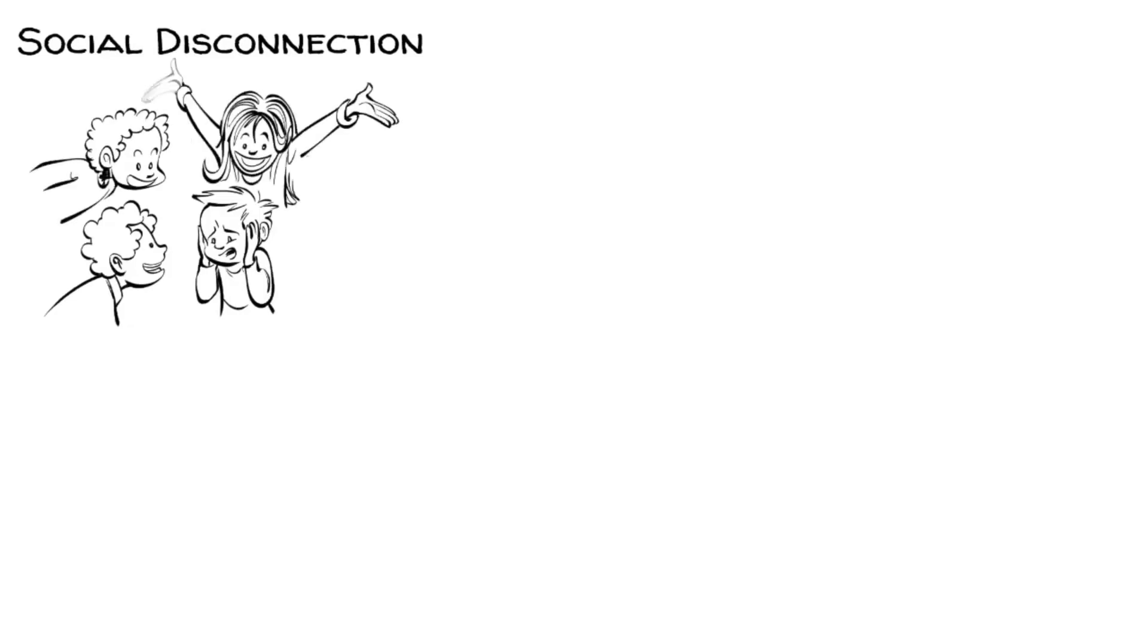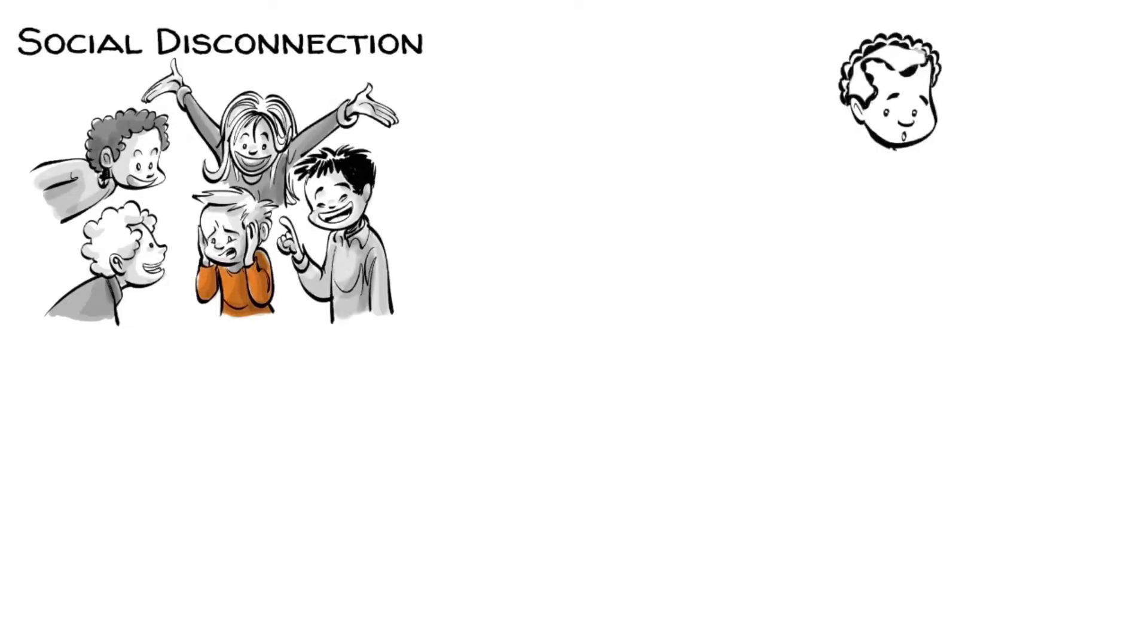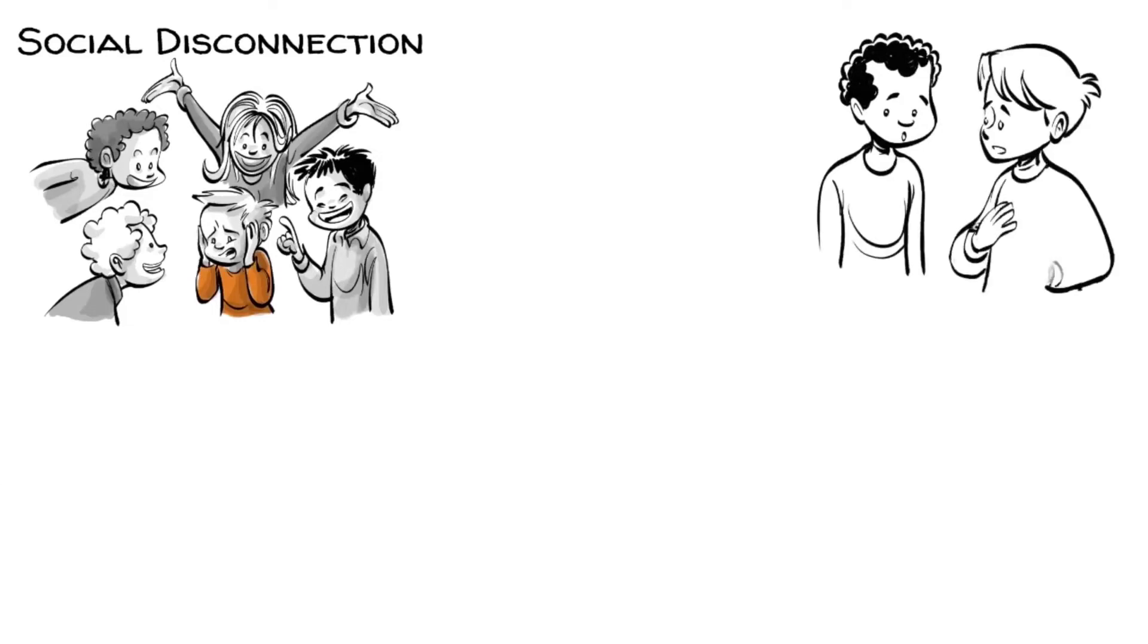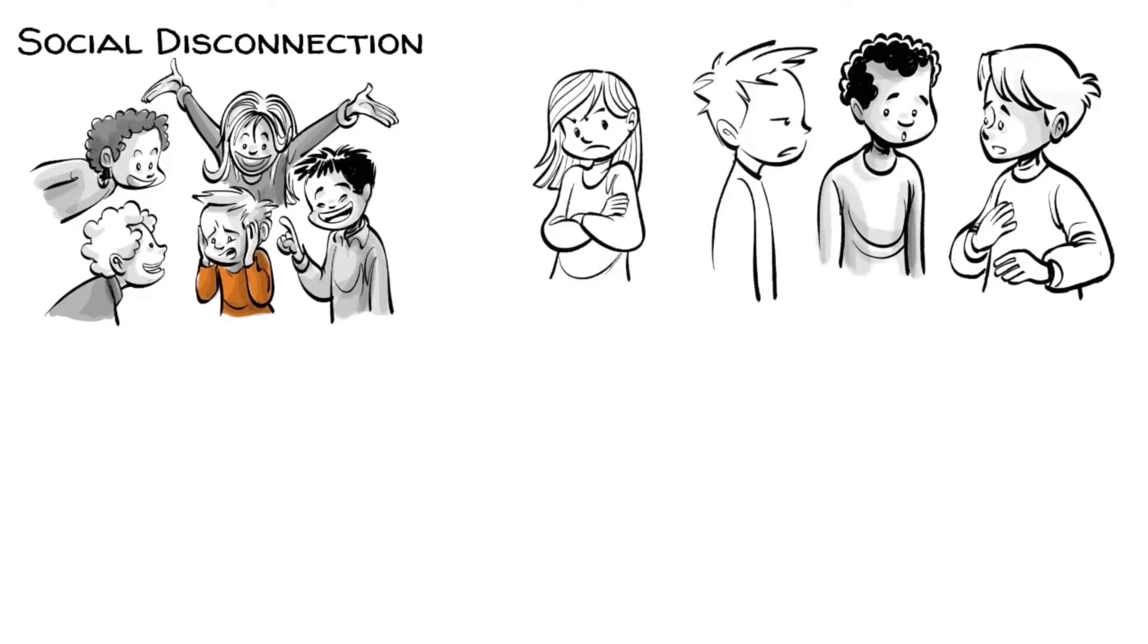Timo experiences social disconnection. He has trouble connecting with others because social settings overwhelm his sensitivity and desire for order. Because human emotions are incredibly complex and don't follow a set predictable pattern, Timo often finds himself misreading situations and upsetting people around him.